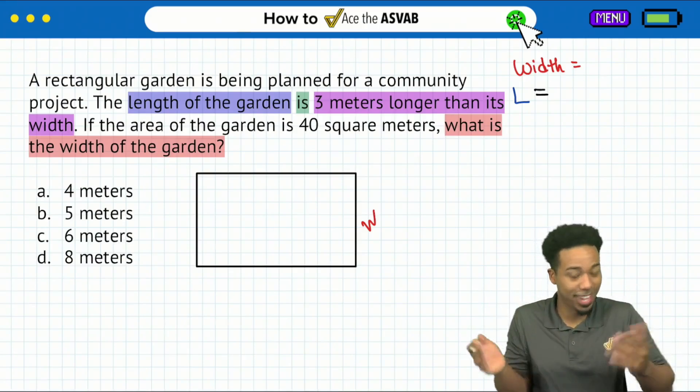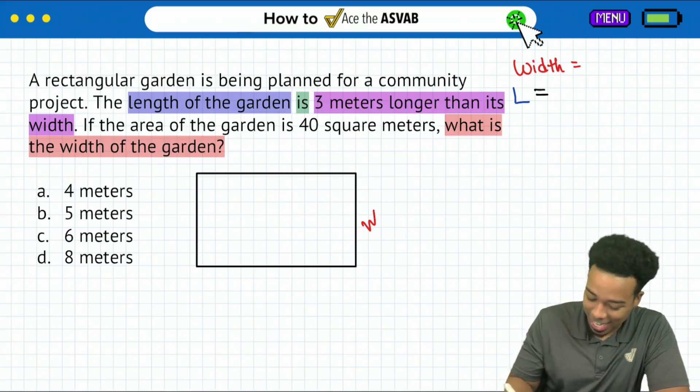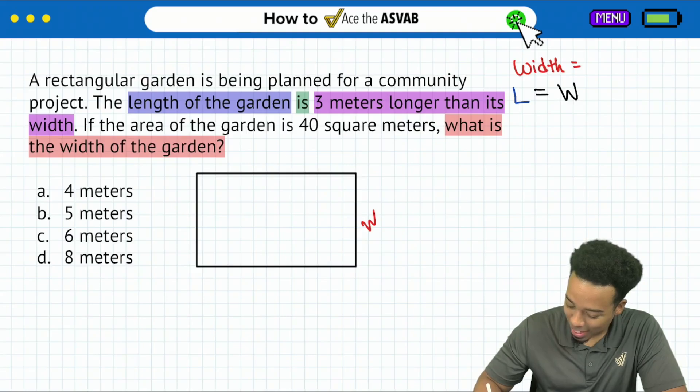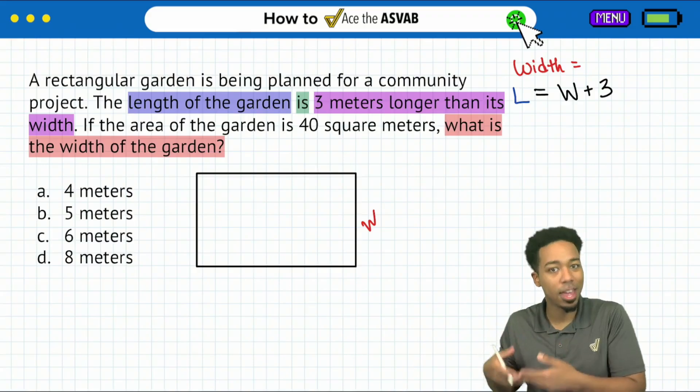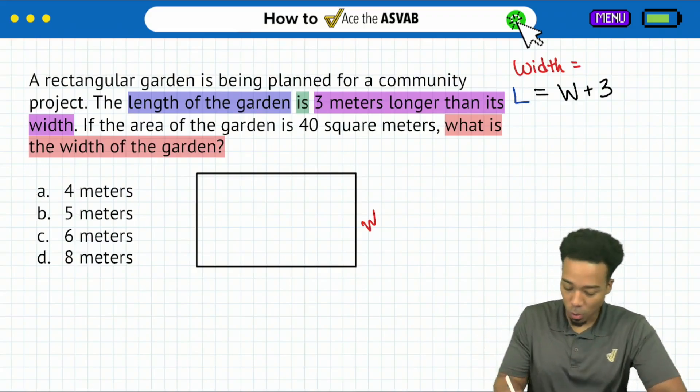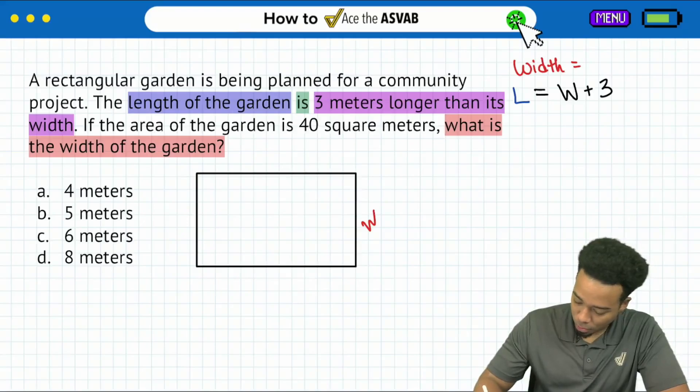So what does that mean? Well, that means that the length is the width plus three, right? Yeah. I think we can say that. We're allowed to say that. The length is the width plus three, three meters longer than the width. And so we'll just go ahead and say W for the width, nice and easy.